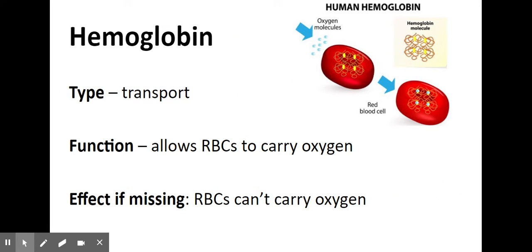Hemoglobin is a transport protein that allows red blood cells to carry oxygen. If it's missing, red blood cells can't carry oxygen. If you have deoxygenated blood, you have all kinds of problems, and that can definitely lead to death.